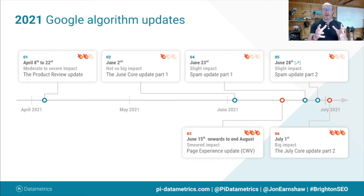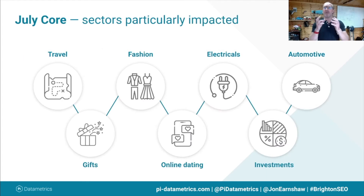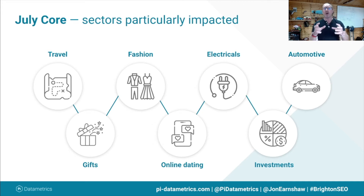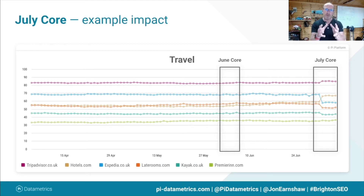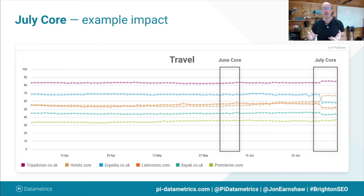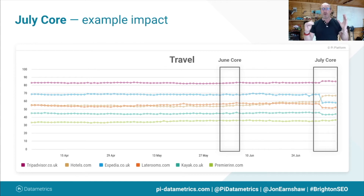Let's take a look at the sectors particularly impacted: travel, gifts, fashion, electricals, online dating, automotive, investments — those were just some of the sectors notably impacted. Let's drill down on travel. This is the impact the June and July cores had on major players in the UK travel sector, focusing on UK destination terms. The July core: TripAdvisor had a nice hike, Expedia lost lots of page one visibility, Hotels.com went up from well below page one onto page one, and late rooms, Kayak, and Premiering were all impacted.